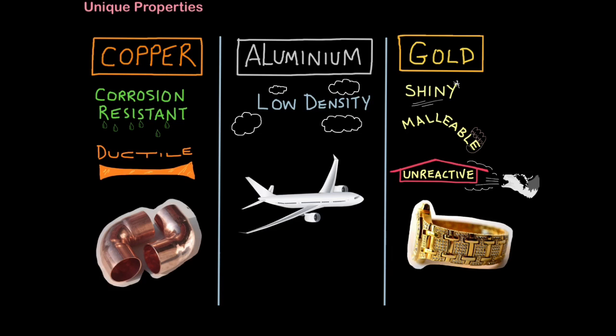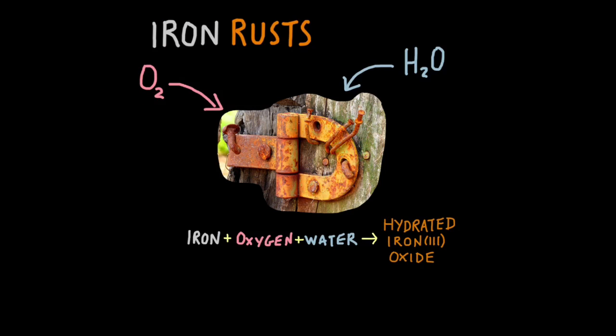However, the price of copper is increasing because we're very low on supply. Not all properties that are unique to metals are actually good qualities. For example, iron rusts. Rusting is a form of corrosion that we only use to describe iron. So you would never say copper rusts, only iron rusts, and that's because of the way in which it does it.